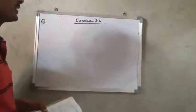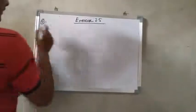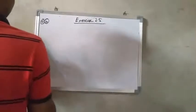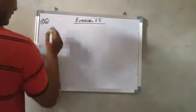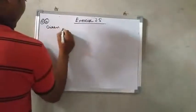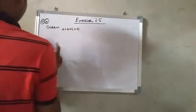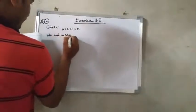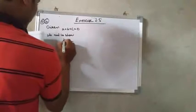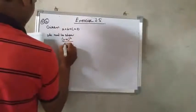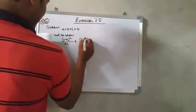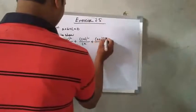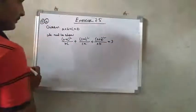In this video, we are going to discuss exercise 2.5, third in number, question 4. The question is: if A plus B plus C is equal to 0, then show that B plus C whole square by BC, plus C plus A whole square by CA, plus A plus B whole square by AB equals 3.